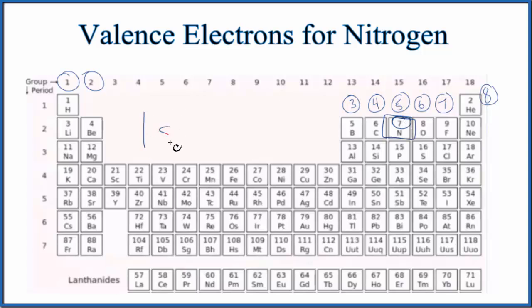So we have 1s2, this shell is full, so we go to 2s2, and then 2p3. 2 plus 2 is 4, plus 3, that gives us the 7.